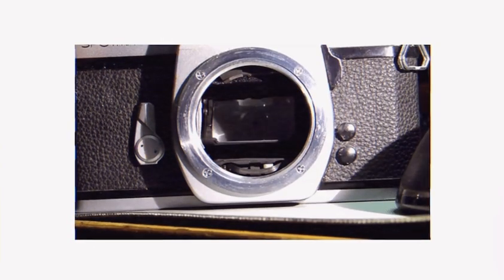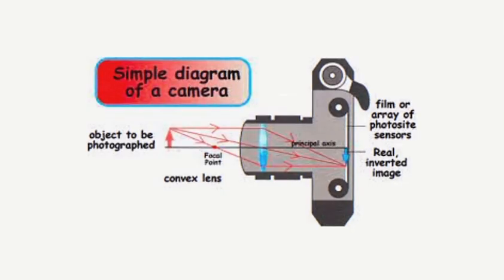To capture an image, the camera shutter opens for a split second, allowing the light reflected off of an object to be transmitted through the lens and then refracted into the camera.